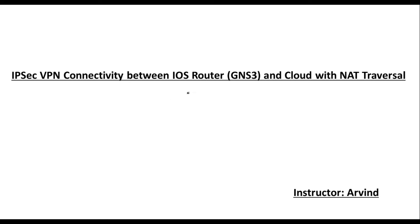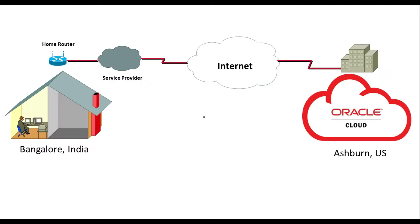For this lab I'll be using a Cisco IOS router running on GNS3, and I will use Oracle Cloud. We are using NAT traversal. Let's understand the scenario: this is me sitting at my home in Bangalore, and on the other side we have Oracle Cloud in the Ashburn region.